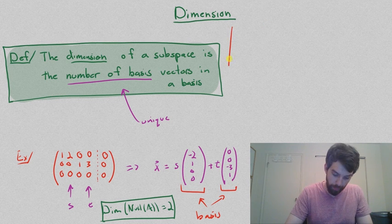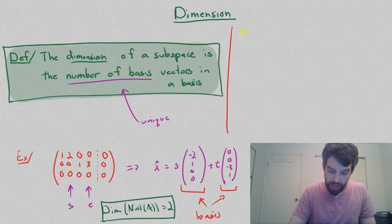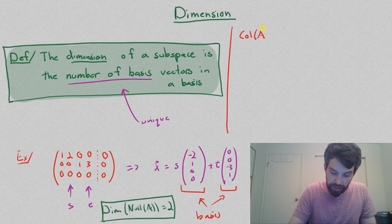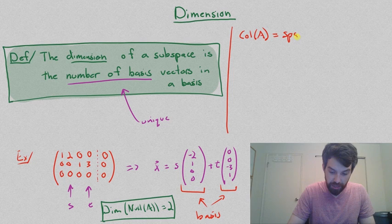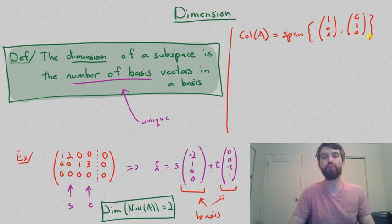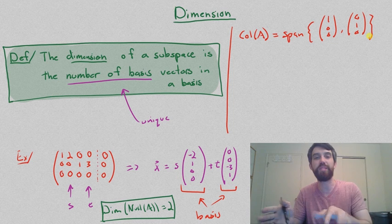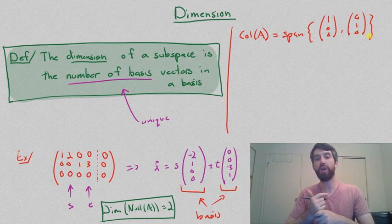We can do much of the same thing if we want to investigate instead the column space. You'll recall that we previously analyzed that the column space of this particular matrix was going to be spanned by the two different vectors that are the columns with leading ones, the 1, 0, 0, and the 0, 1, 0, where we sort of threw out and ignored the columns that were free. We only kept the columns with leading ones when we were trying to span the column space.